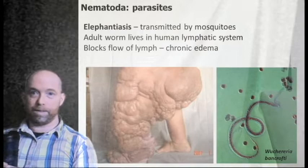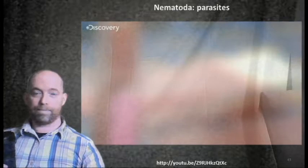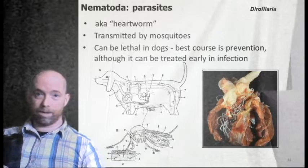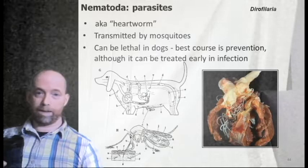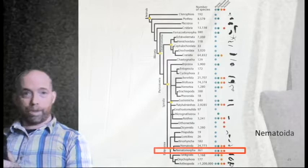Other nematode-transmitted diseases include elephantiasis, filariasis, hookworm, and heartworm in dogs and cats — the drugs given to pets in spring to combat heartworm target a nematode parasite.